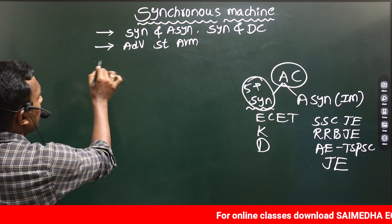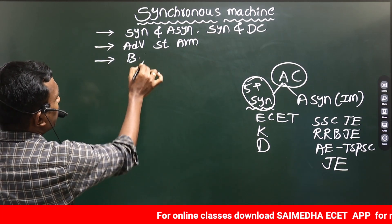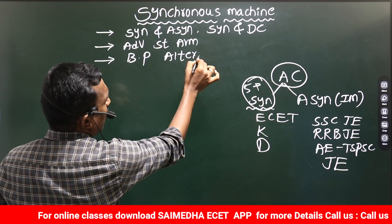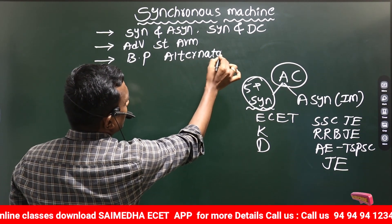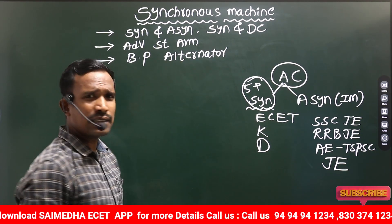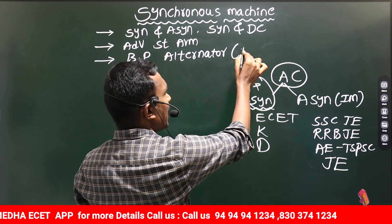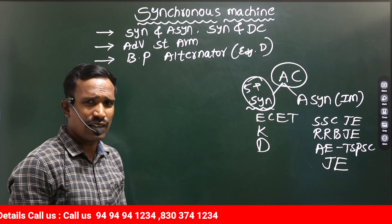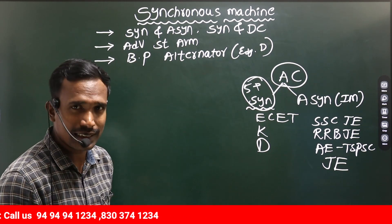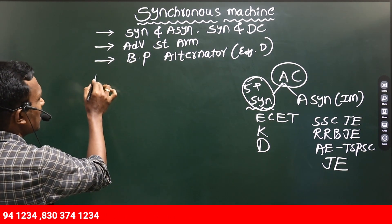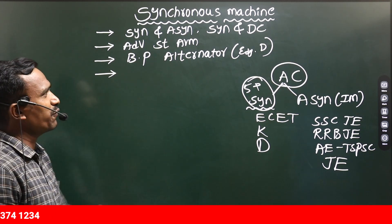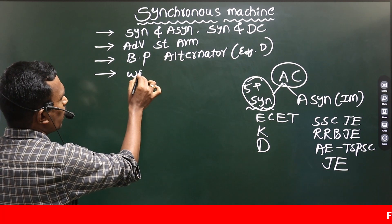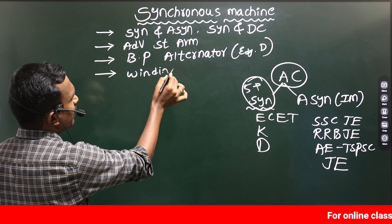Then after, the basic principle of Synchronous Generator — Synchronous Generator, alias Alternator. What are the basic principles? That is: what is the magnitude of EMF, and what is the direction of EMF? We need to discuss these two points. Then after the construction of the Alternator, we need to go for Windings — what are the different types of Windings we have?